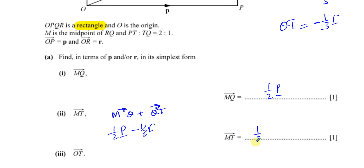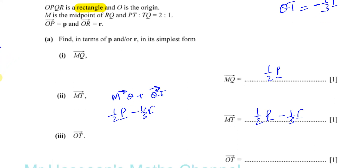Notice I'm underlining the vector to show that it's a vector — here they have them in bold type. If you can't write in bold type, you must underline it to show that it's a vector.